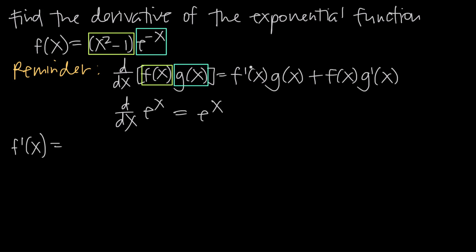The product rule formula tells us that the first thing we need is f prime of x, the derivative of f of x. In our case, f of x is x squared minus 1, so we want the derivative of x squared minus 1. Taking it term by term: the derivative of x squared is 2x, and the derivative of 1 is 0 — the derivative of any constant is 0. So we have 2x minus 0, which is just 2x. So the derivative of x squared minus 1 is 2x, and that 2x takes care of f prime of x.